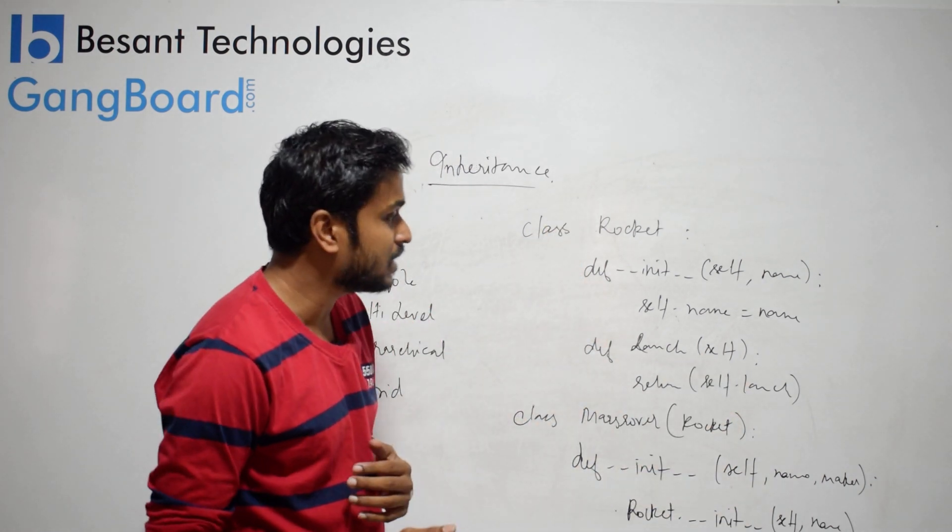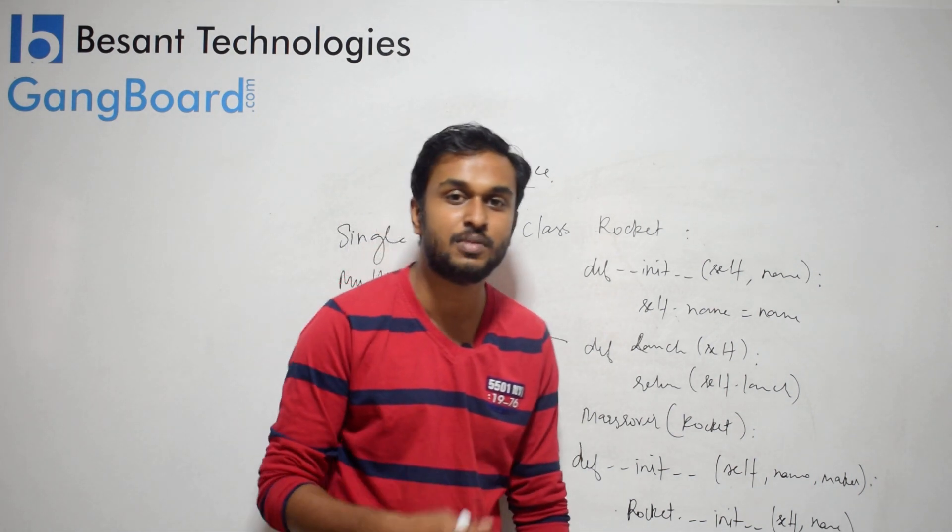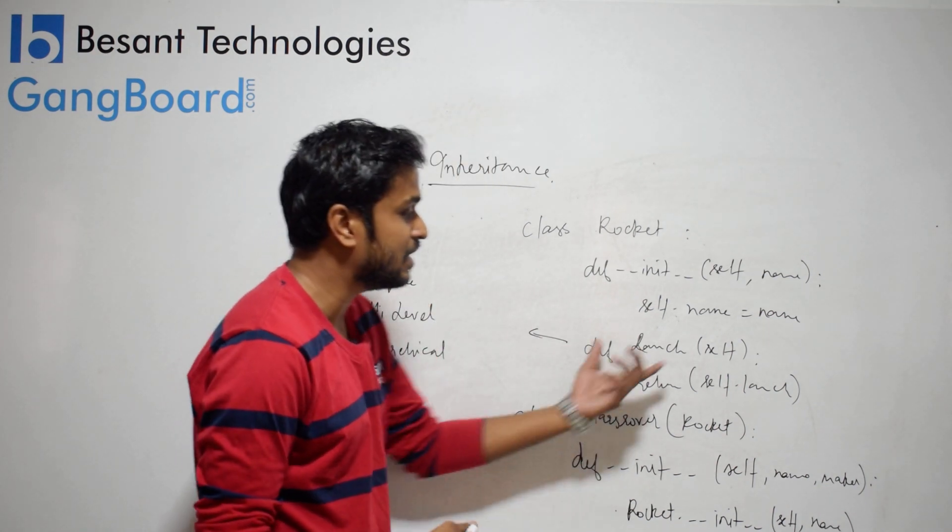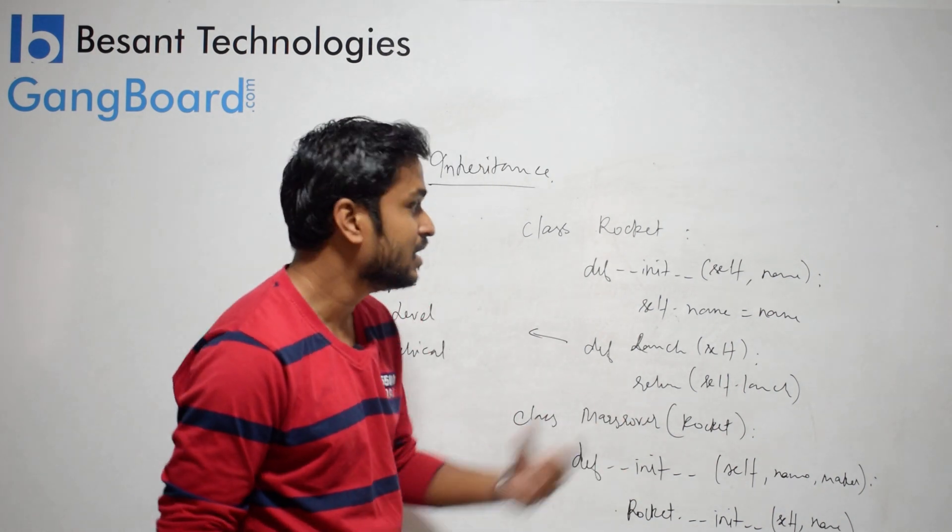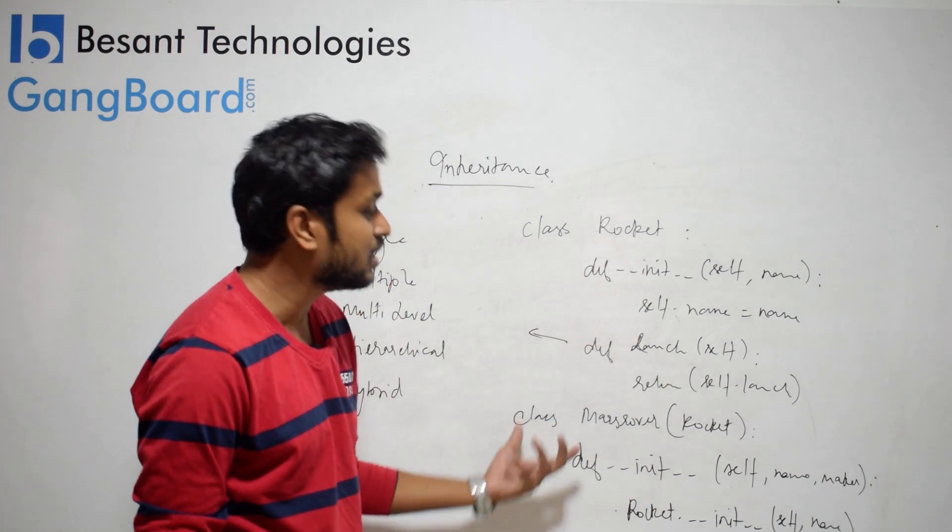Now, the purpose is to launch. I will reuse this class. That's why I will create a derived launch class. How do I do that?